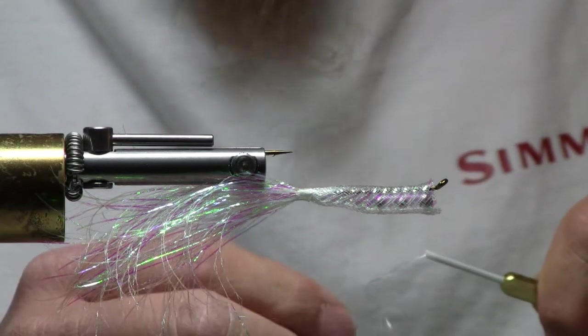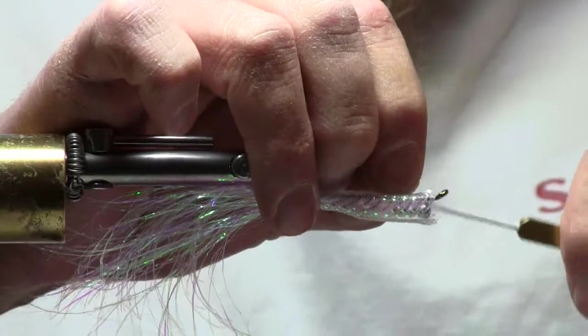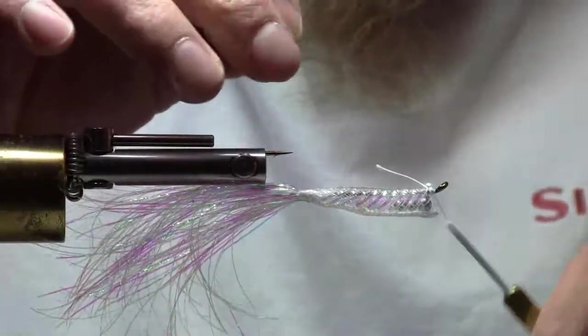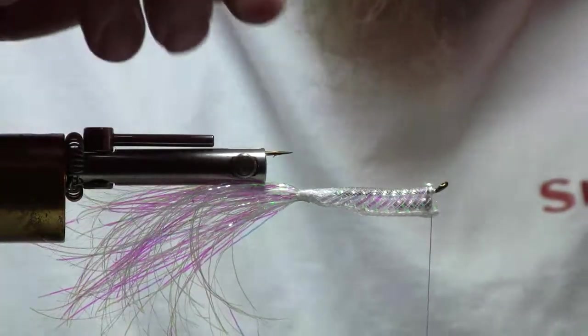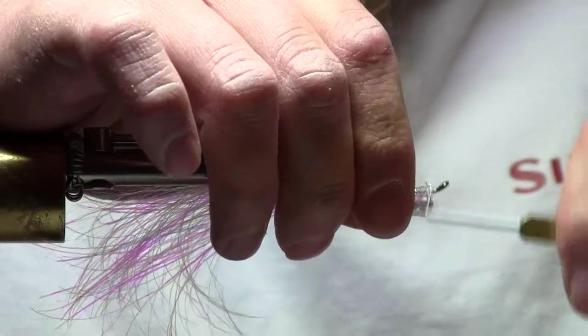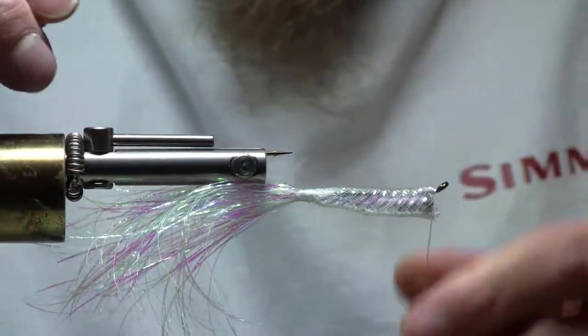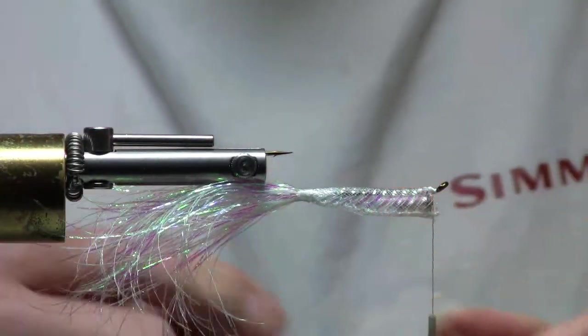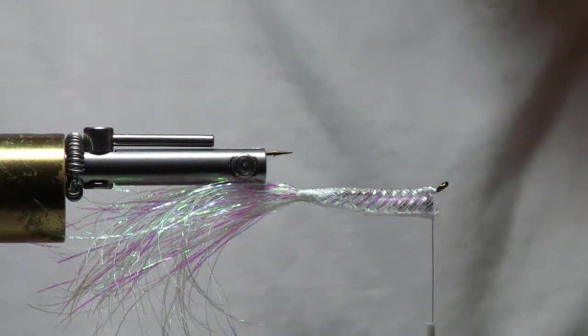Now I'm going to reintroduce my thread at the front of the hook right behind the eye. Get rid of the excess. Just leave it like that. I have not tied in the rattle. I'm not going to tie in the rattle. Here's where I introduce my wing, or put on my wing, which is, once again, the pearl web.